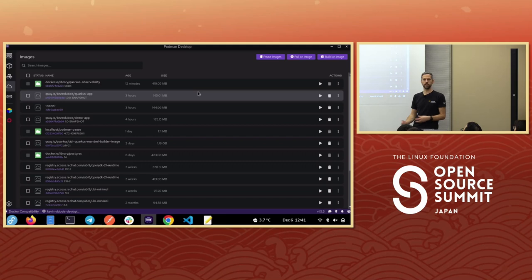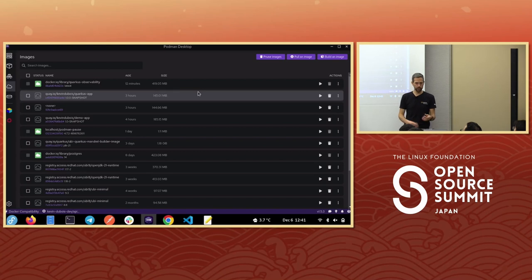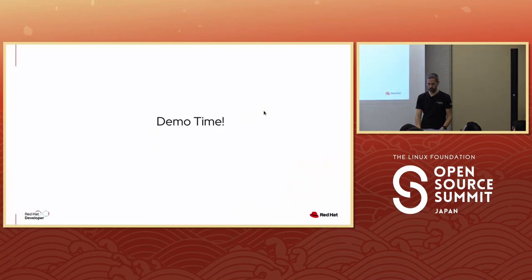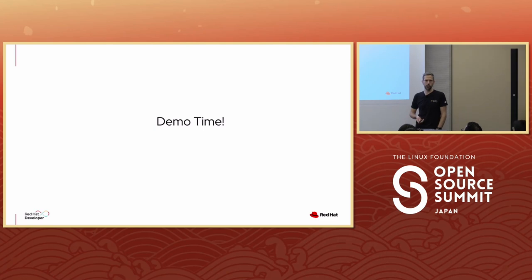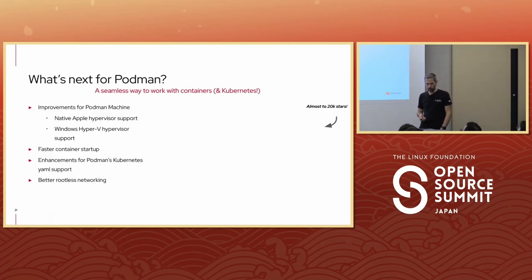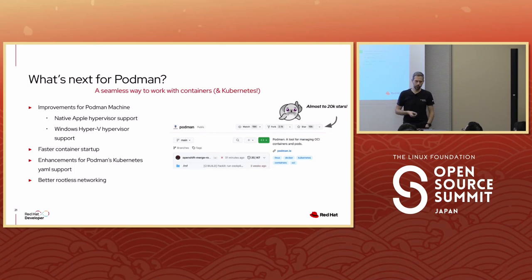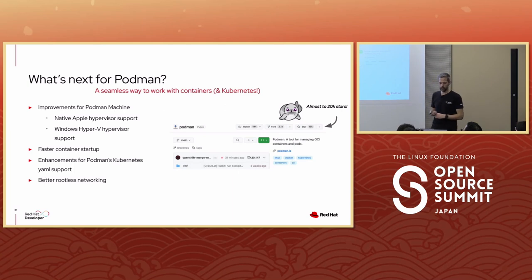That's a quick overview of Podman Desktop. As you can see, you can manage containers and create a nice short feedback loop for developers to work with containers and interact with Kubernetes. Podman Desktop is available for free — fully open source. Just go to podman-desktop.io and try it out. As for what's next, it's in full development — stable, but with many new features still being added.